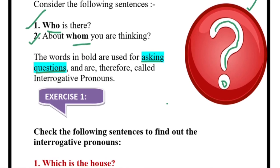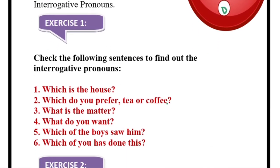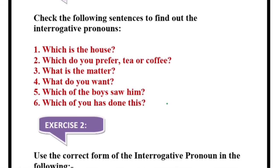Now we will do the last exercise. Exercise one: check the following sentences to find out the interrogative pronouns. 'Which is the house?' — 'which.' 'Which do you prefer, tea or coffee?' — 'which.' 'What is the matter?' — 'what.' 'Which of the boys saw him?' — 'which.' 'Which of you has done this?' — 'which.' I think you've got six out of six.